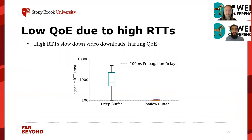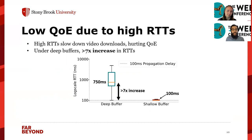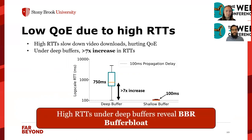We show a graph of RTT with log-scale RTT on the y-axis, comparing a shallow buffer (100 KB) and a deep buffer (10 MB), with a 100 millisecond propagation delay set in our network. The shallow buffer has a median RTT of just 100 milliseconds — no extra queuing delay. However, the deep buffer has a median RTT of 750 milliseconds, a seven times increase compared to the shallow buffer. These higher RTTs under deeper buffers reveal that BBR is experiencing some sort of buffer bloat.